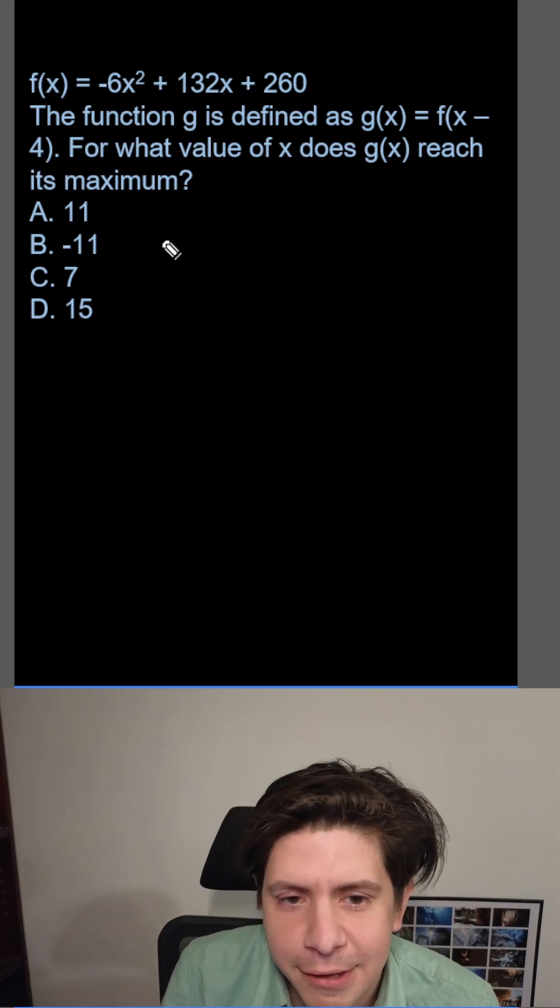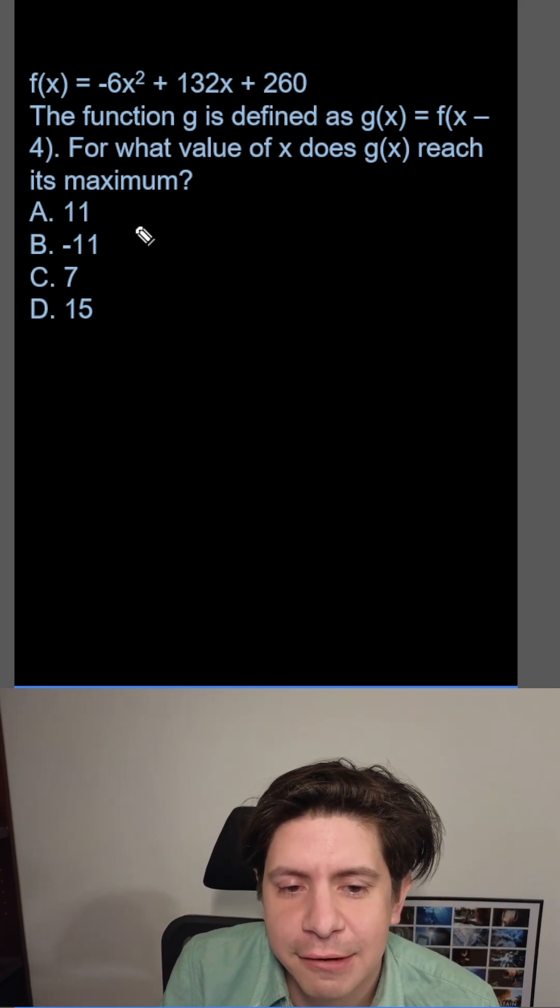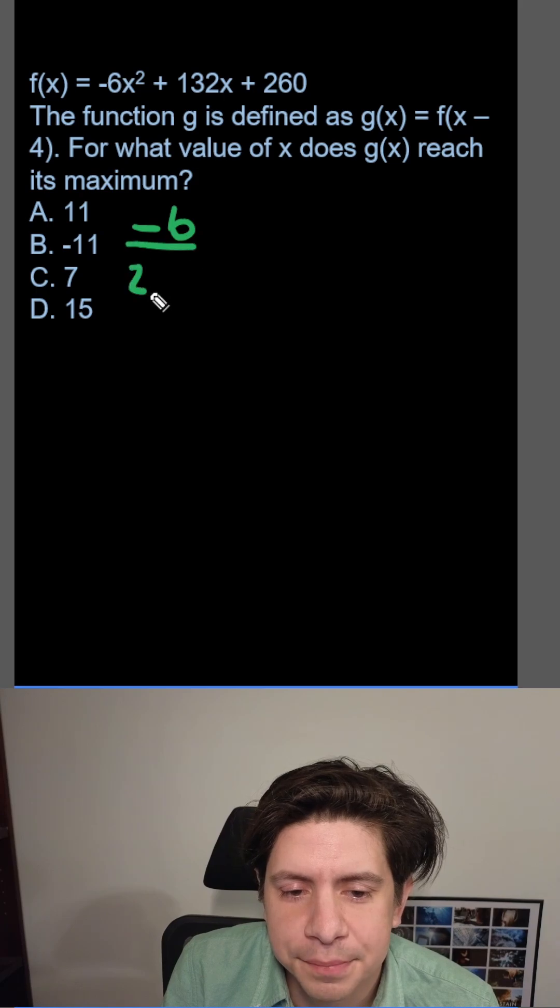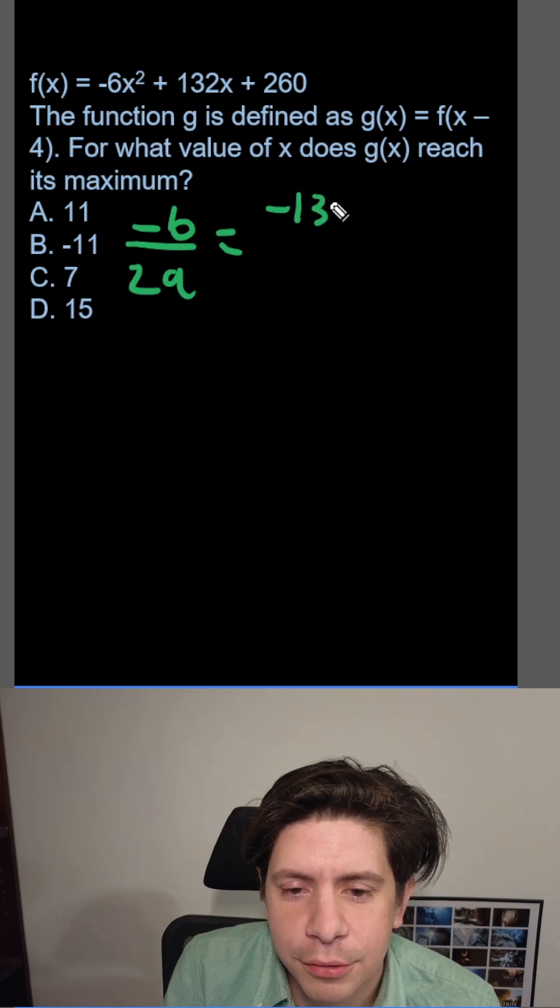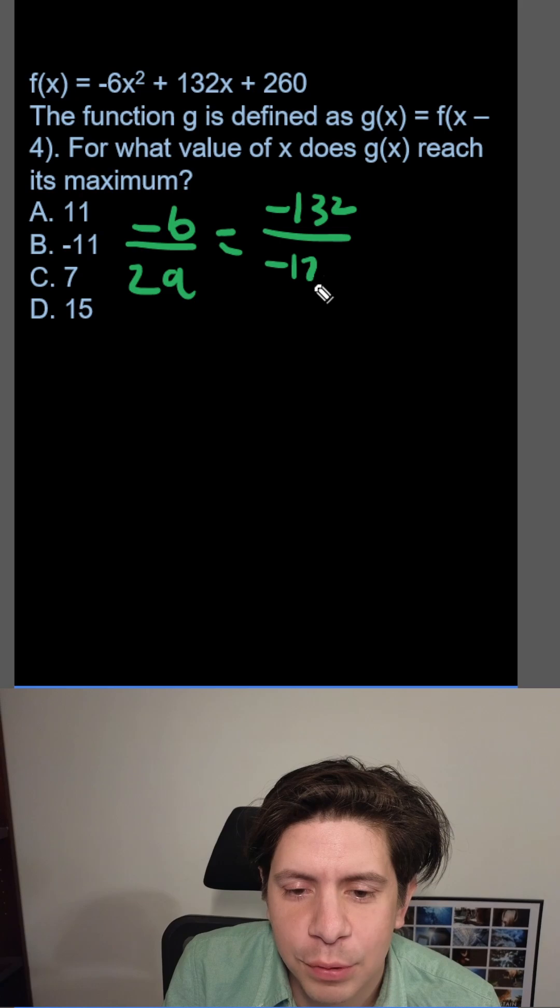So to find the maximum, we find the axis of symmetry, which is negative b over 2a, which in this case equals negative 132 over negative 12, which equals 11.